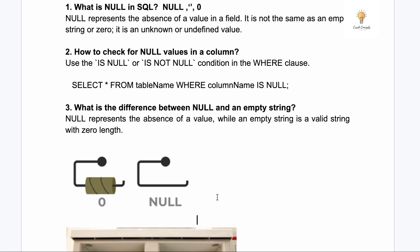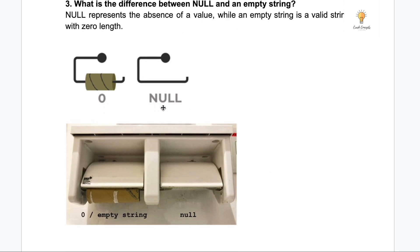To understand it better, consider a toilet paper roll analogy. An empty roll still has the roll — that's like zero or an empty string. But when there is no roll at all — nothing — that is NULL. NULL means undefined, there is simply nothing there.